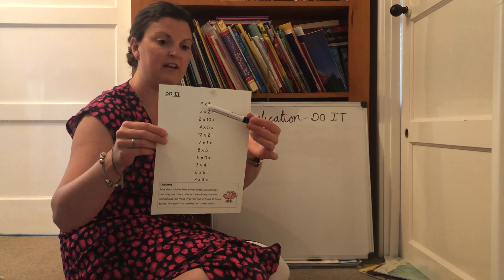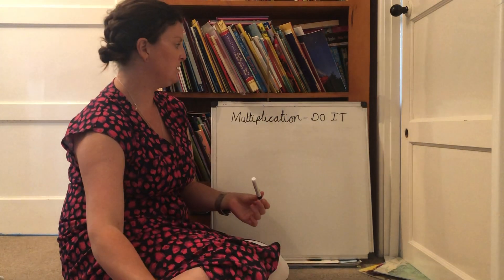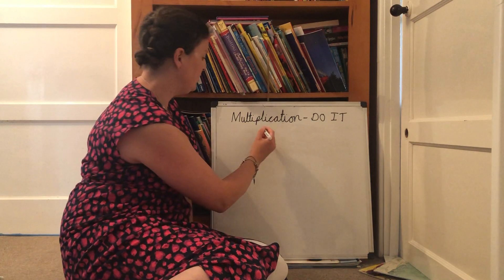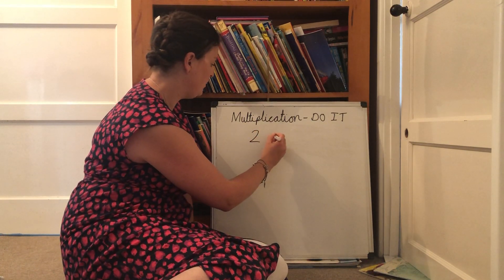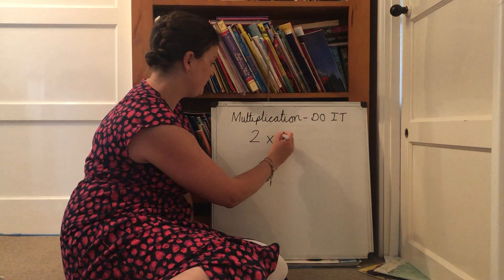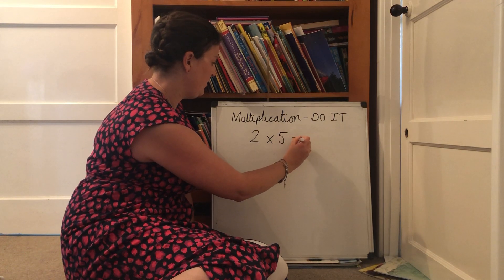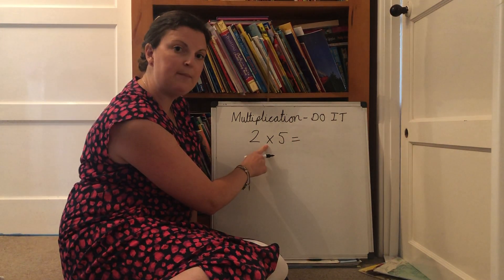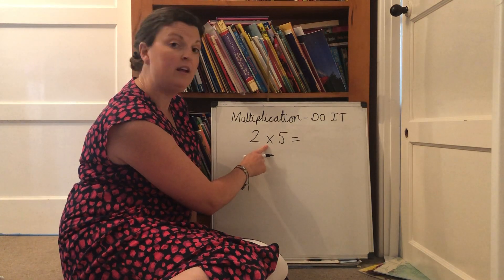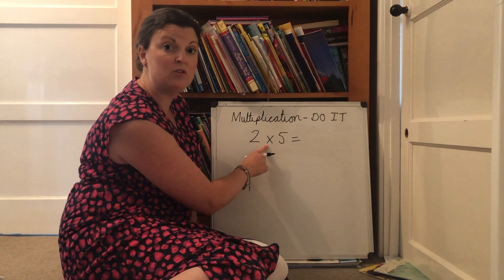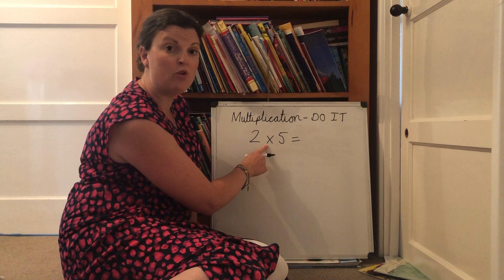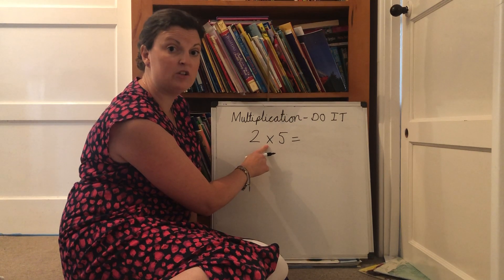So the first one I'm going to have a look at is this one at the top. So it says two... Can you remember what that symbol in the middle means? That's right, it means times or multiply or groups of or even lots of.